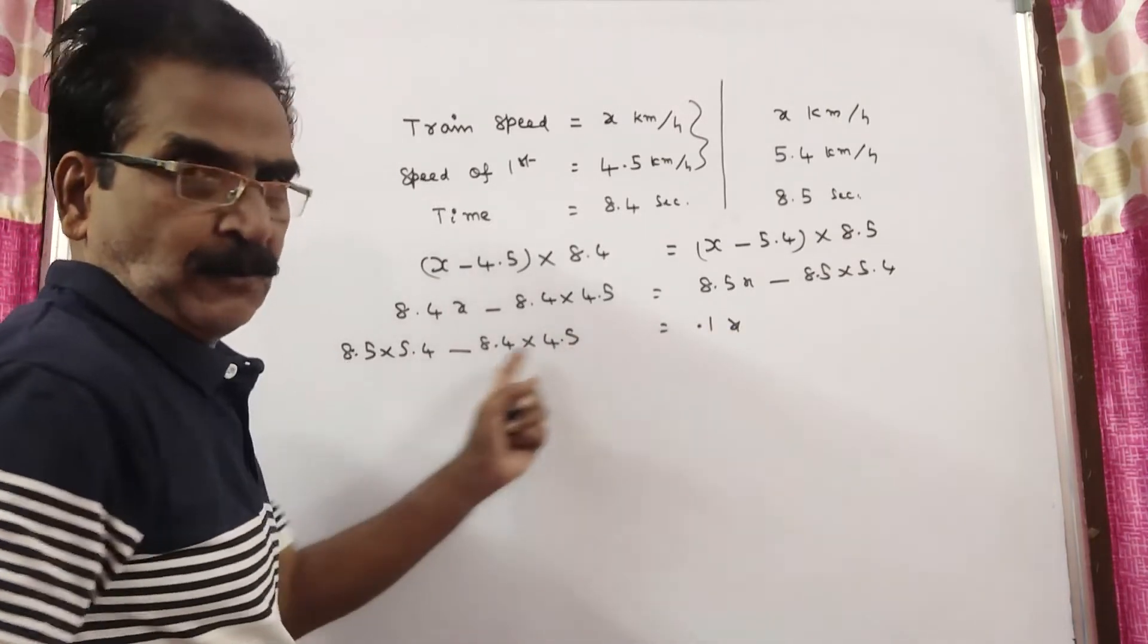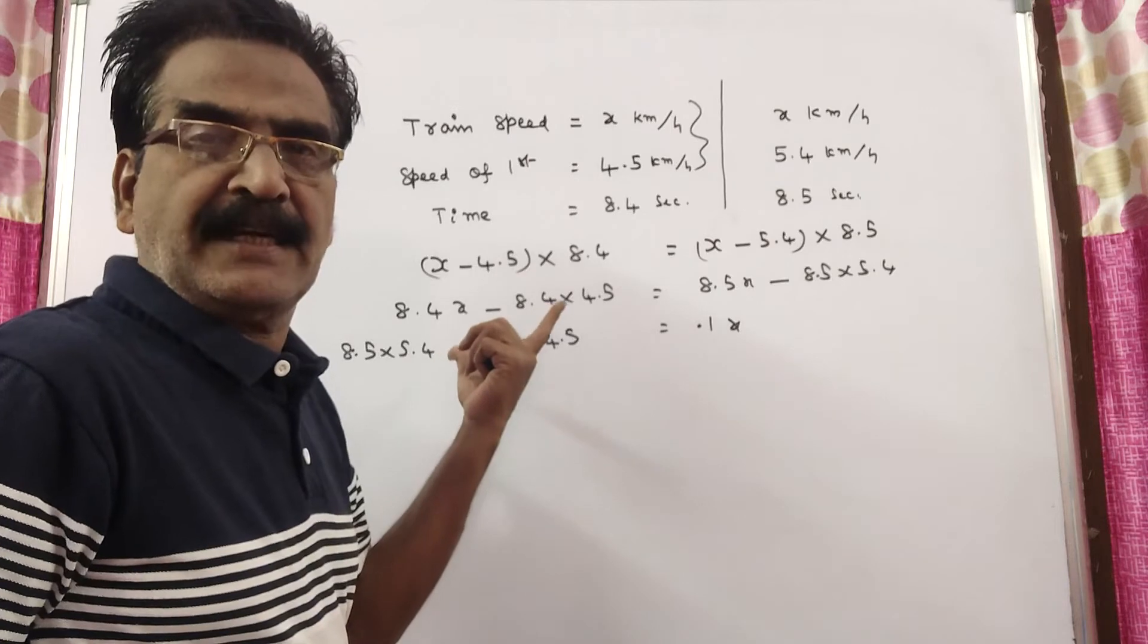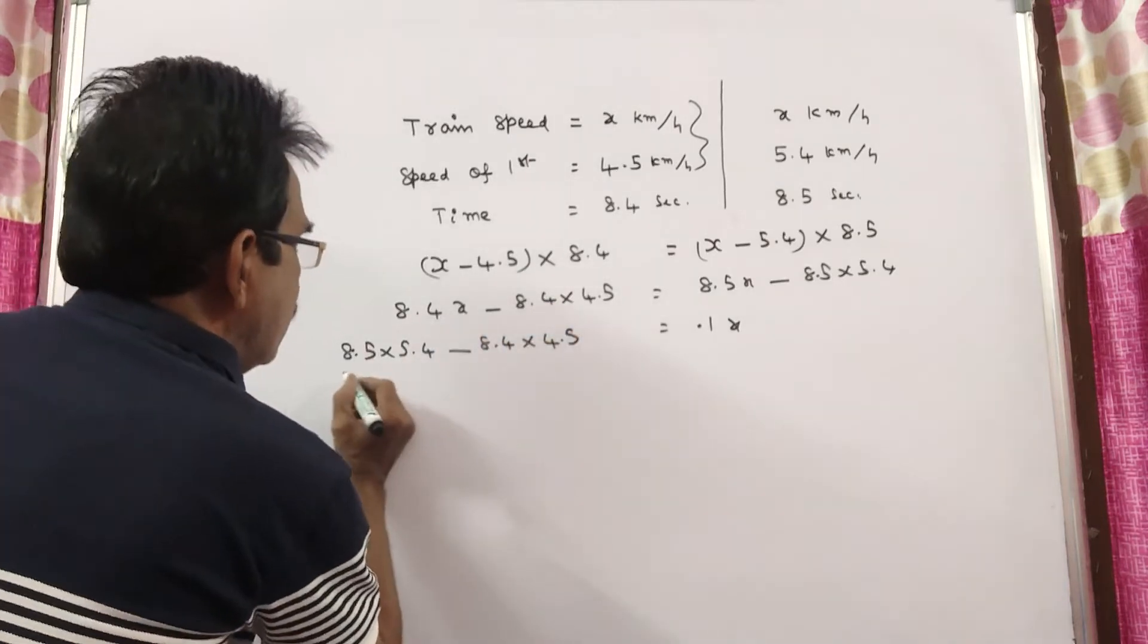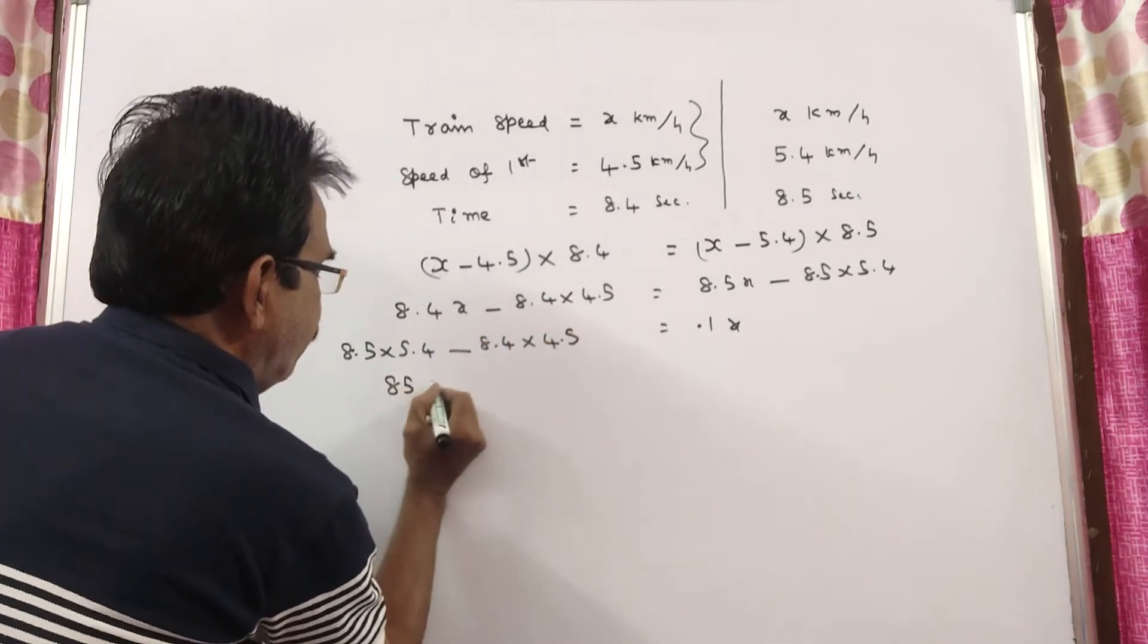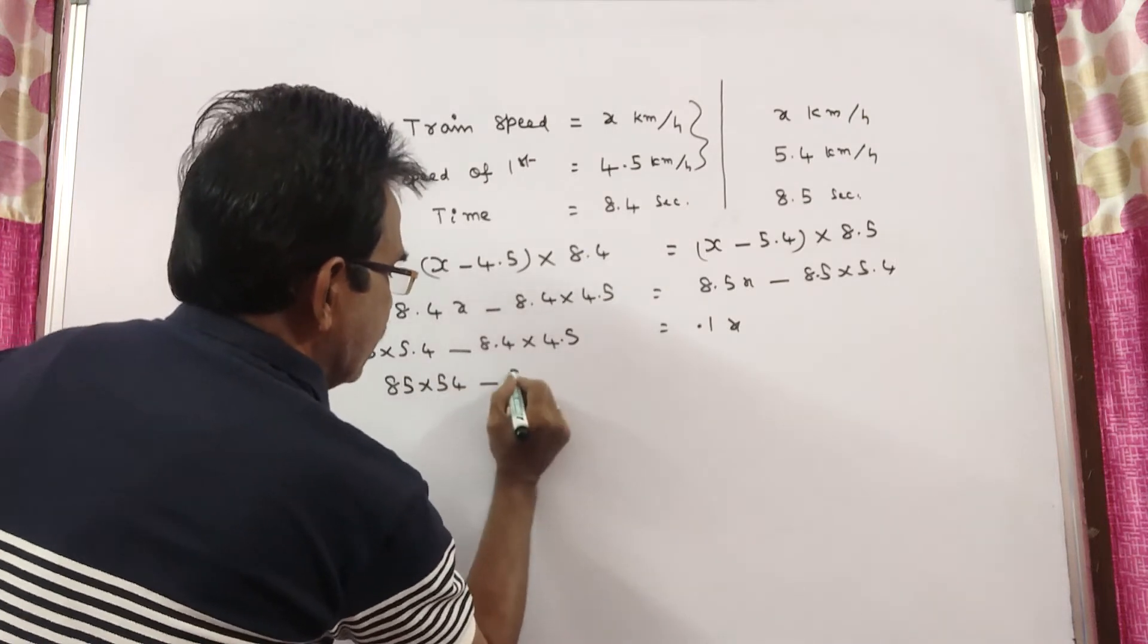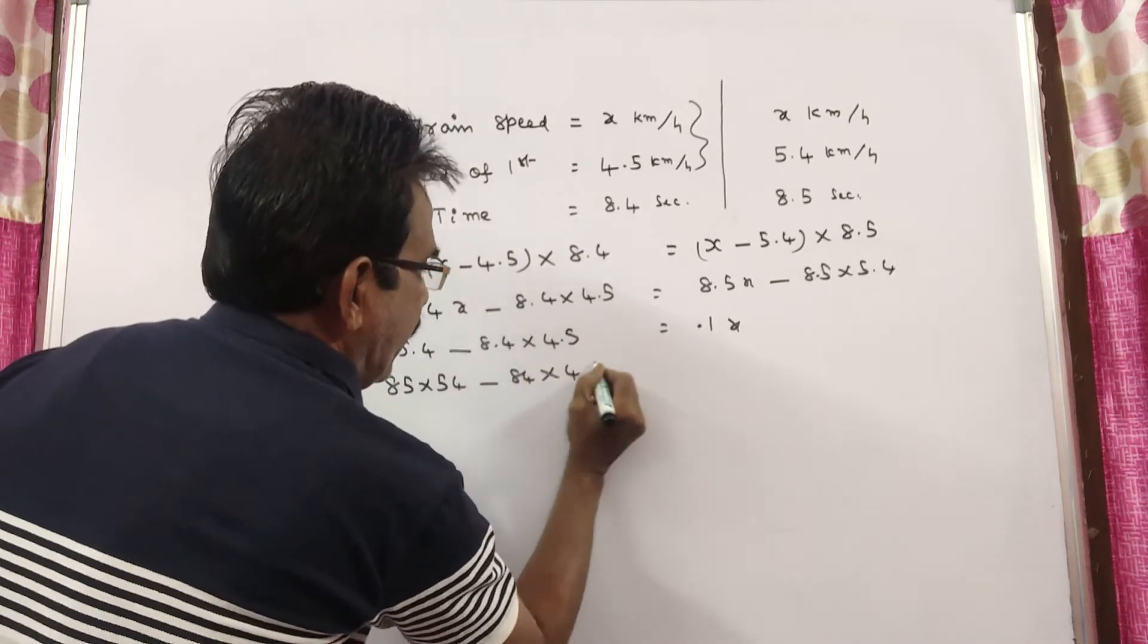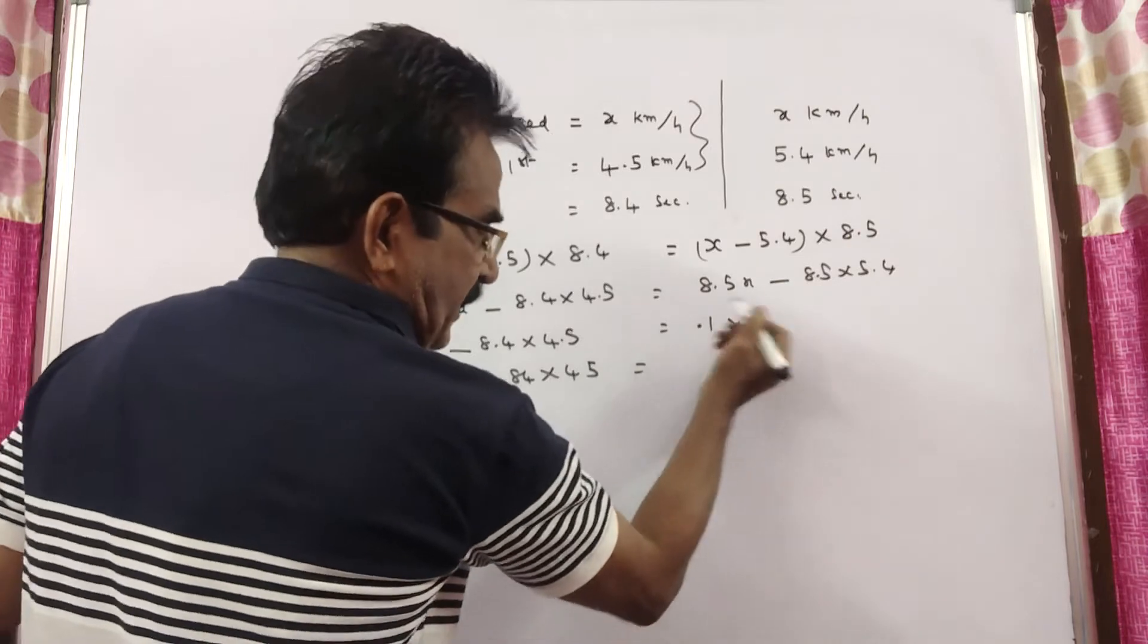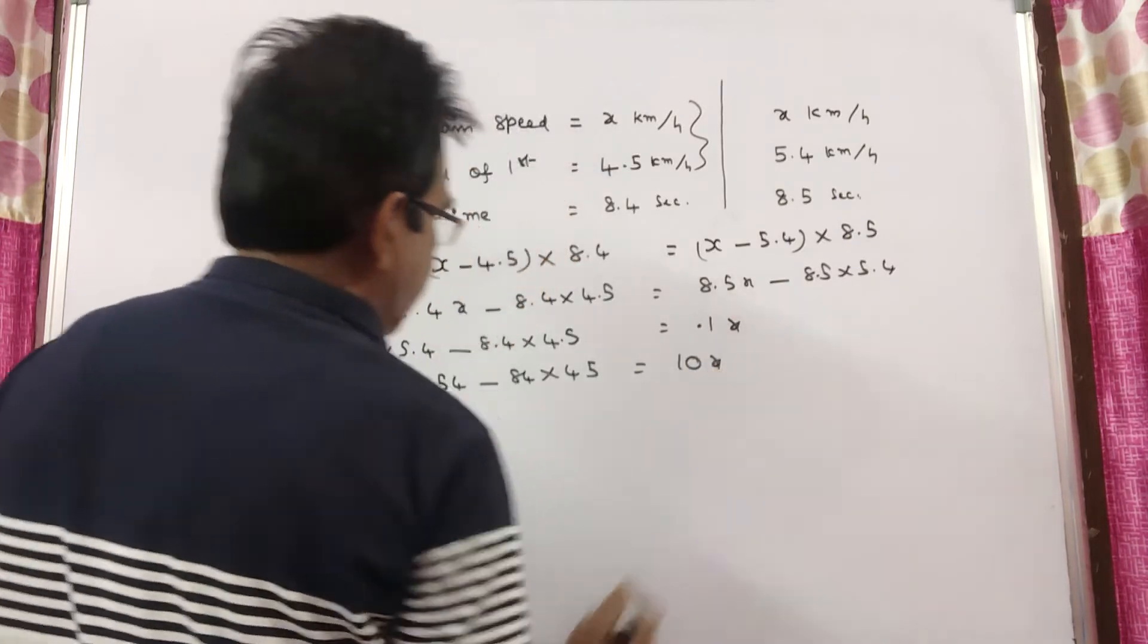See, friends, by multiplying 100 on both sides, we get 85 into 54 minus 84 into 45. This is equal to 0.1 into 100, which is 10x.